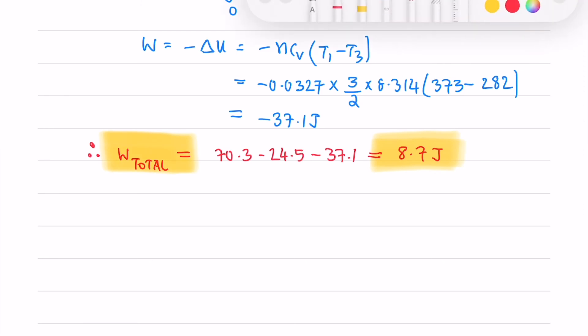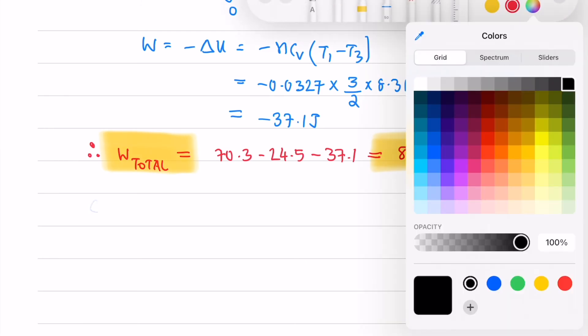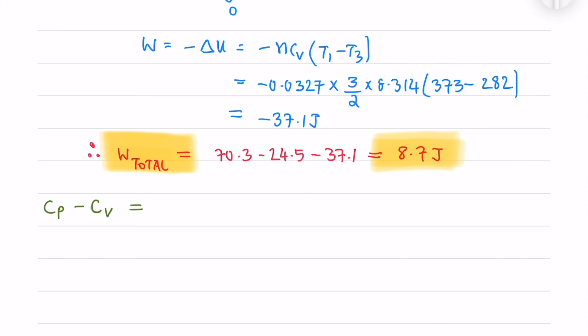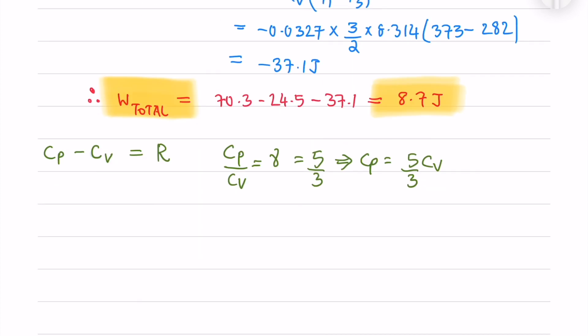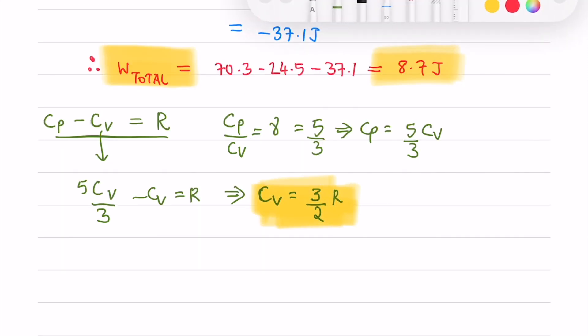For CV we should know the relation CP minus CV equals R and CP by CV is gamma. So we will use CP equals 5 by 3 times CV. So we will have CV is 1.5 R and CP is 5 by 2 R. This is for a monoatomic ideal gas. Please remember this.